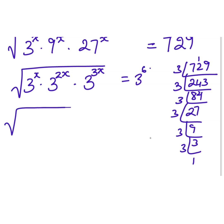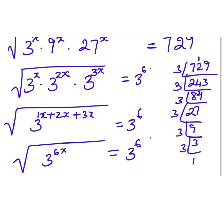Now here, since the bases are same, we can write it as 3 and add the powers. Since it is multiplication, x plus 2x plus 3x equals 3 to the power of 6. That will be a root. If there is no number it is 1, 1 plus 2 plus 3 is 6x. Root of 3 to the power of 6x equals 3 to the power of 6.